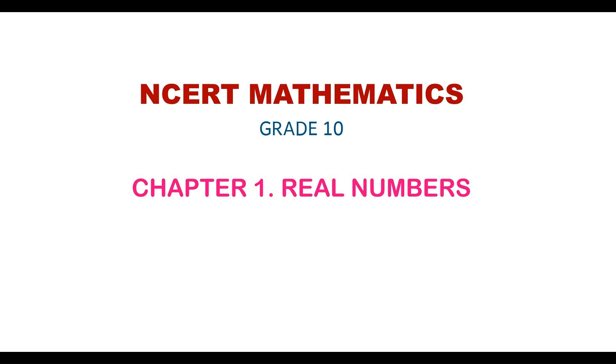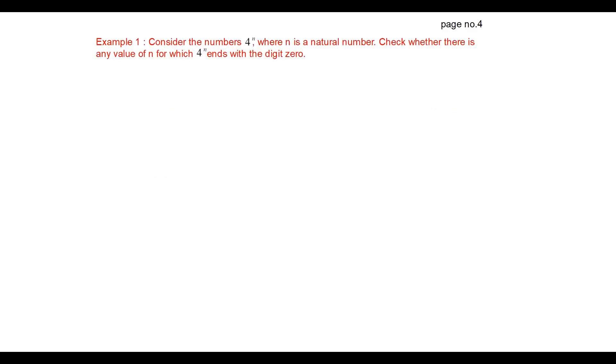In this video we will see NCERT mathematics for grade 10, first chapter real numbers. Next we will see example number 1. Consider the number 4 power N where N is a natural number. Check whether there is any value of N for which 4 power N ends with the digit 0.